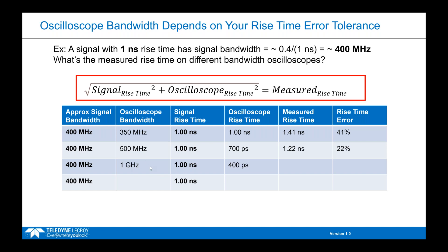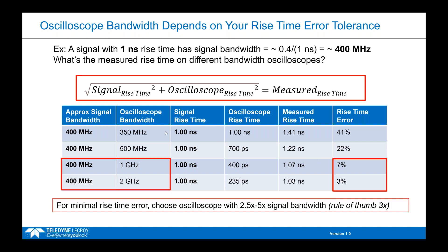At one gigahertz, the measured rise time is 7% slower than the signal's actual rise time. And at two gigahertz, that error drops to 3%. The takeaway is that when you have an oscilloscope with bandwidth at least two and a half times your signal's bandwidth, you're really starting to minimize your rise time error. If your error tolerance is even tighter, you would want an oscilloscope with five, six, or even seven times your signal's bandwidth — it really depends on your error tolerances.